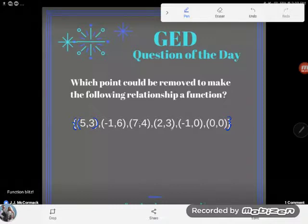So this particular set contains one, two, three, four, five, six points. And remember that when you look at a point, the first number is the x value or the input value, and the second number is the y value or the output value.